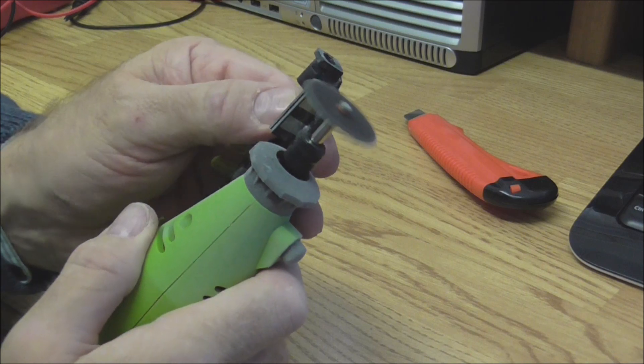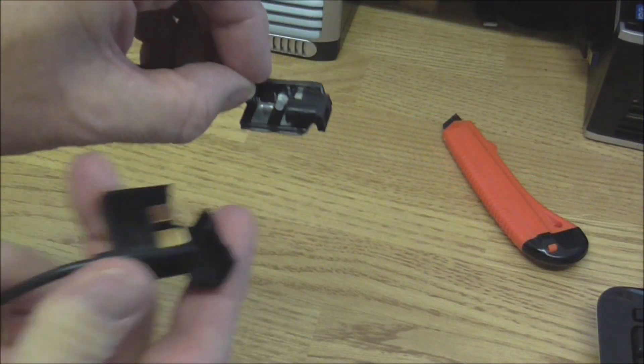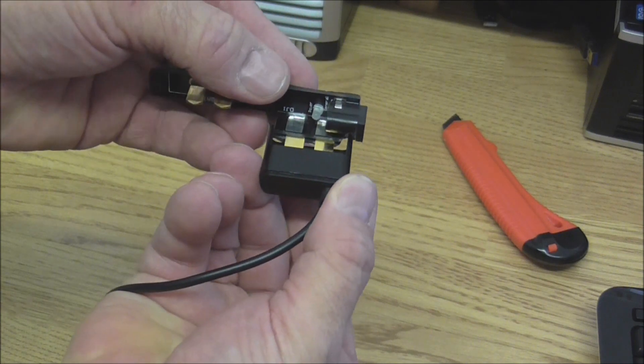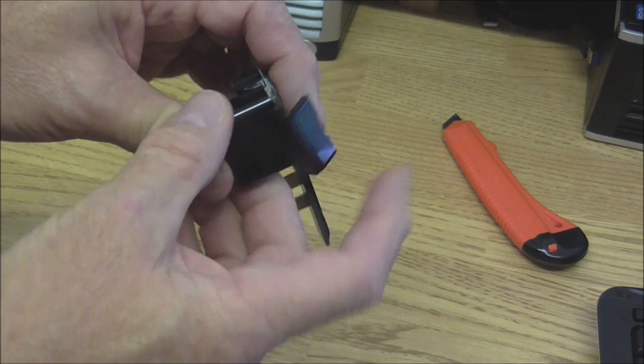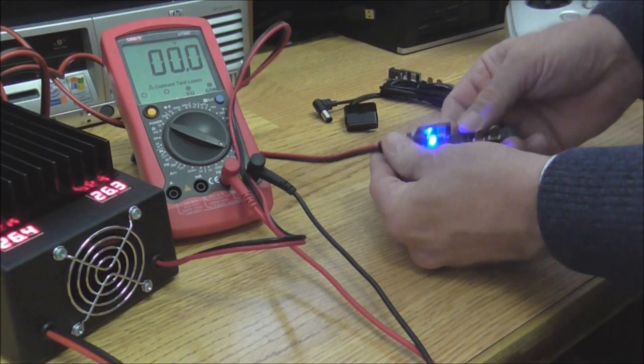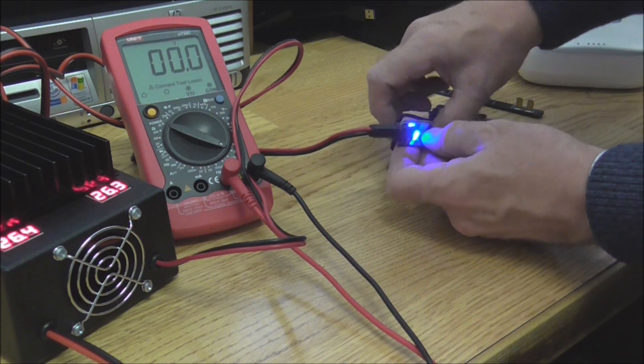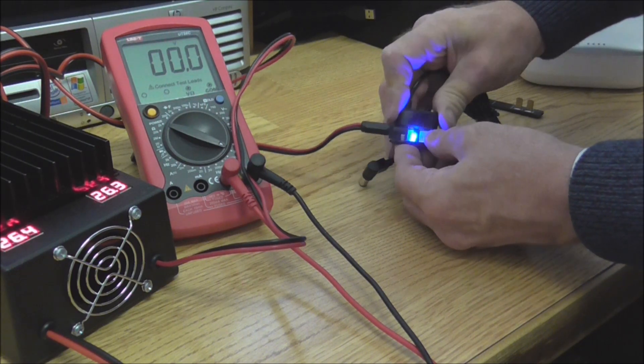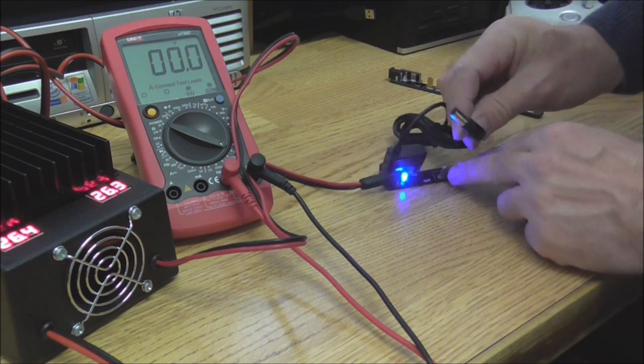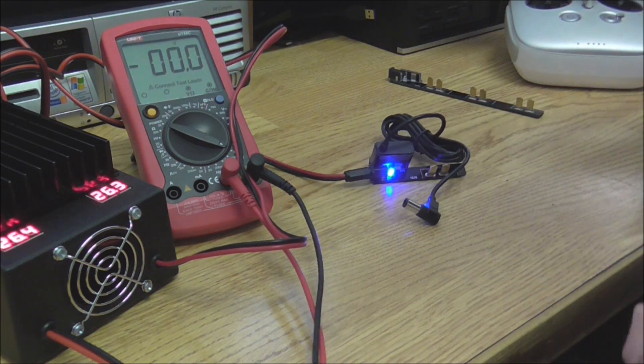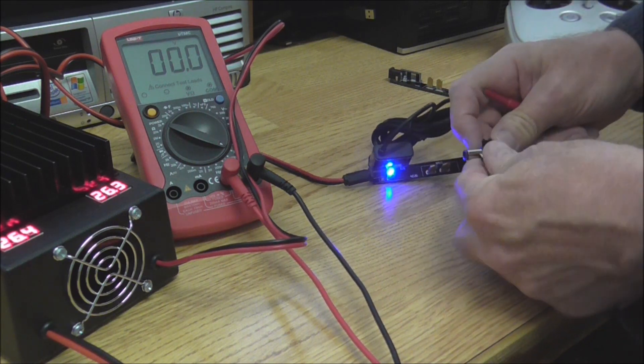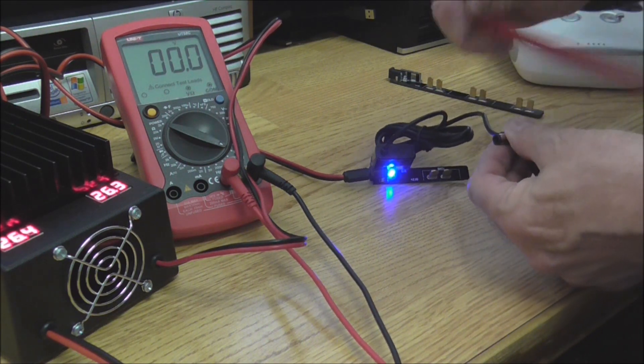When applying power to the charging board, the LED should light. If all is well, plug in the supplied DJI remote control charging lead into the charging board. Using a voltmeter, check that the plug has negative on the outside, as shown here, and positive in the center pin.